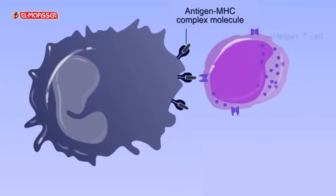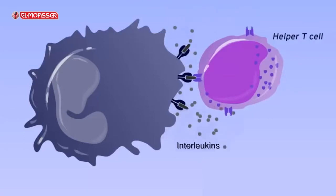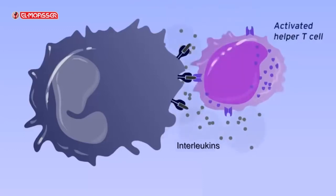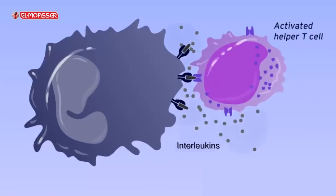The major histocompatibility complex protein binds with the separated antigens, forming a complex of antigen and MHC. This complex is displayed on the surface of the macrophage to be recognized by the helper T cells (Th).